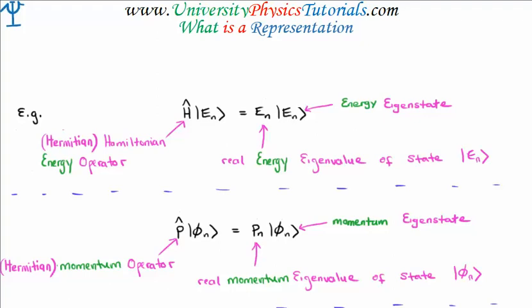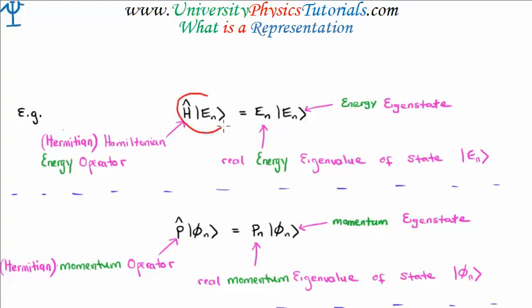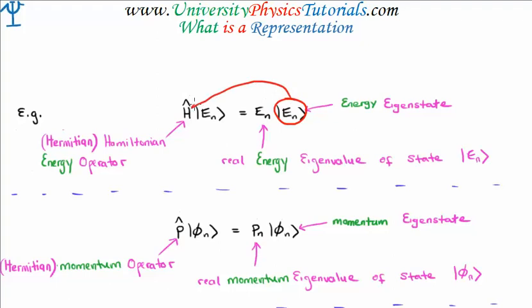I'm going to get immediately stuck in talking about three of the most important types of eigenvalue equation. The first is known as the energy eigenvalue equation, where we have the energy operator known as the Hamiltonian. When the Hamiltonian operates on an energy eigenstate or eigenket, we get back the same ket with a multiplicative scalar known as the energy eigenvalue of that particular state. These are the eigenstates or eigenkets or eigenvectors of the Hamiltonian operator.